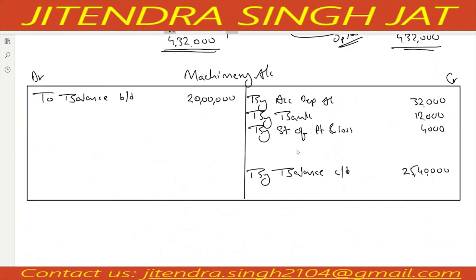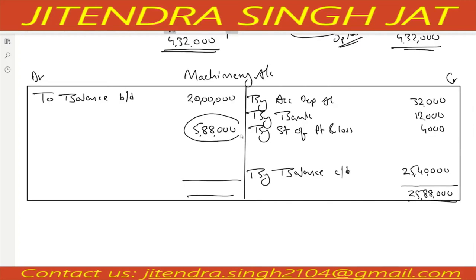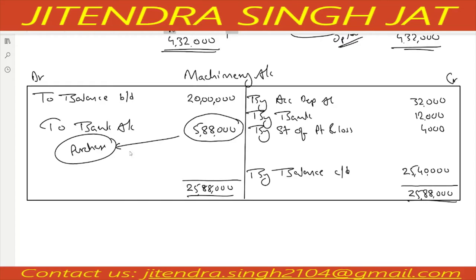Total credits: 25,40,000 plus 48,000 = 25,88,000. Opening balance 20,00,000 on debit side, so balance remaining on debit side is 5,88,000 — this represents purchase of machinery. Purchase of machine 5,88,000 goes to investing activity. All working notes are prepared, now we start the cash flow statement.